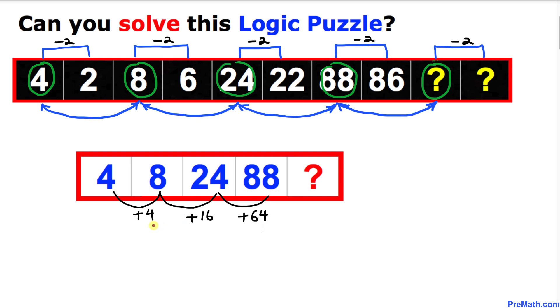And if we look at these numbers we see that we get the next number by multiplying by 4. Likewise over here we get the next number by multiplying by 4.